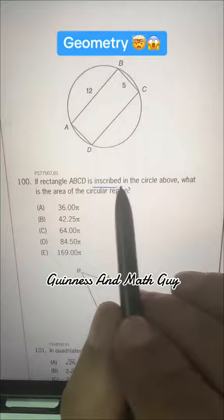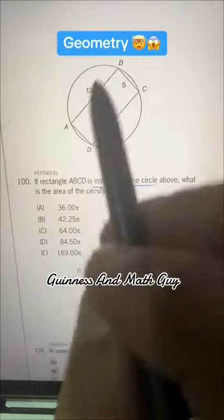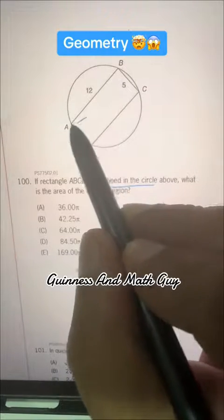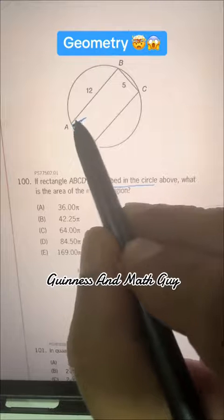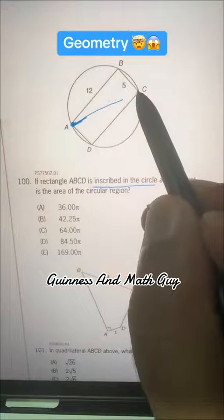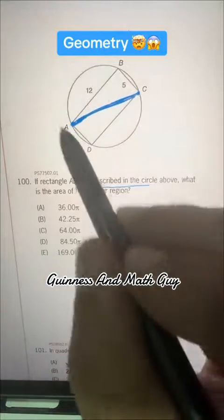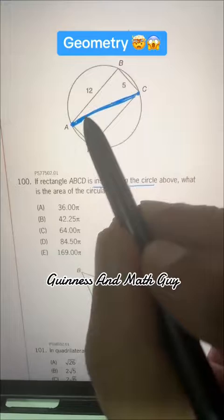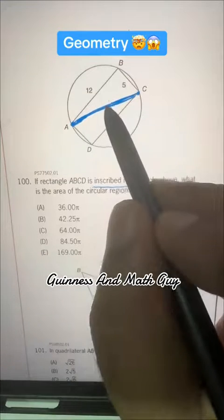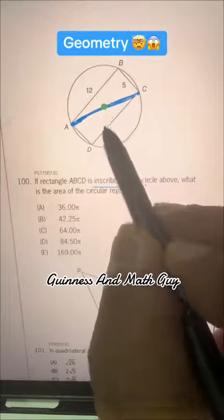When we say inscribed in a circle, its diagonal is the diameter, the diagonal from here to here, A to C. This straight line is the diameter of the circle, and here in the middle is the center of the circle.